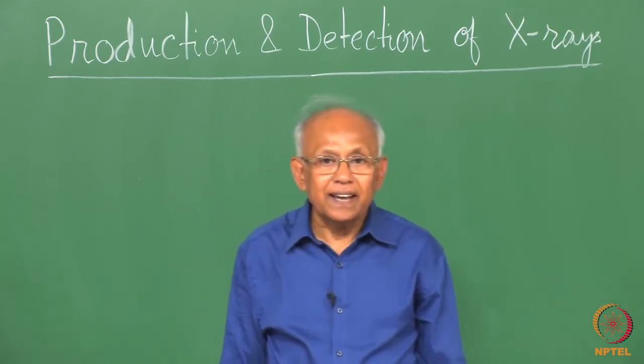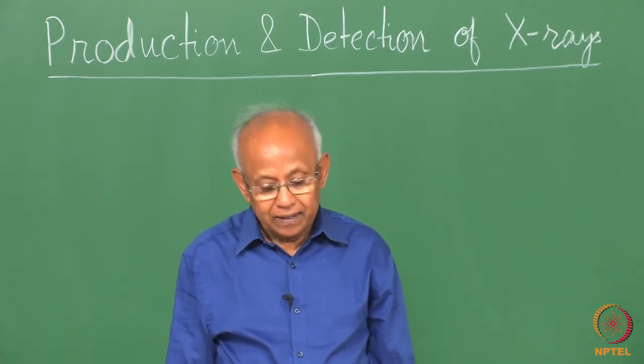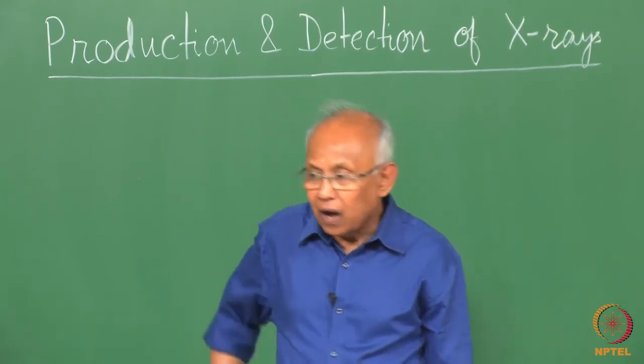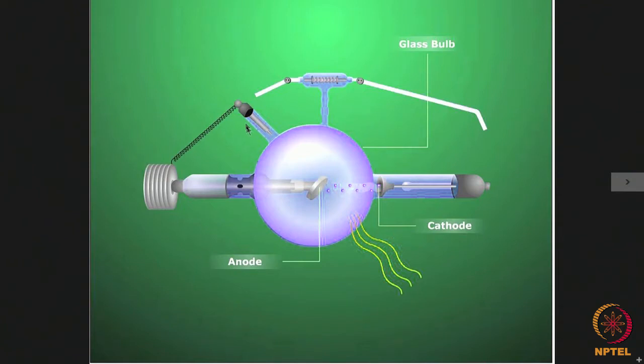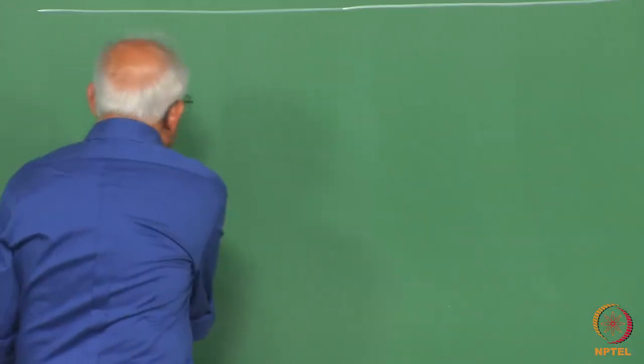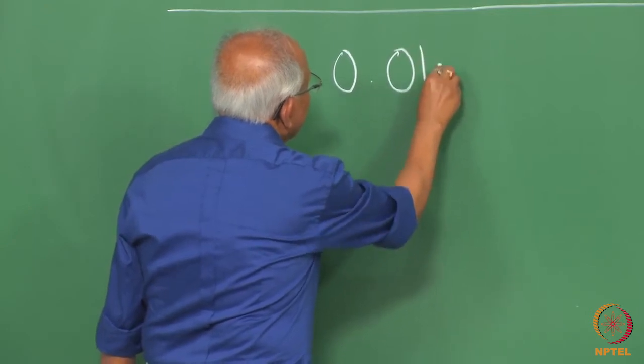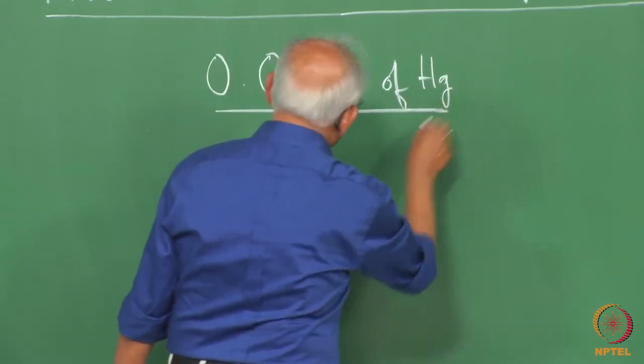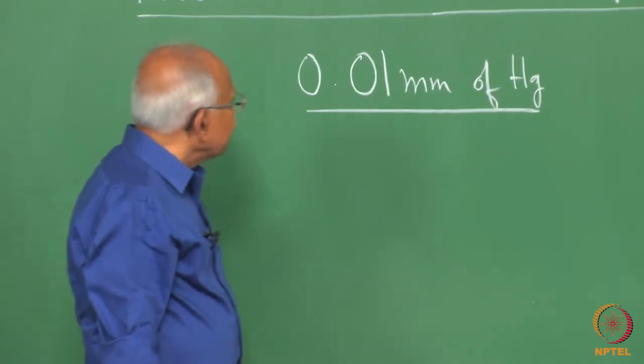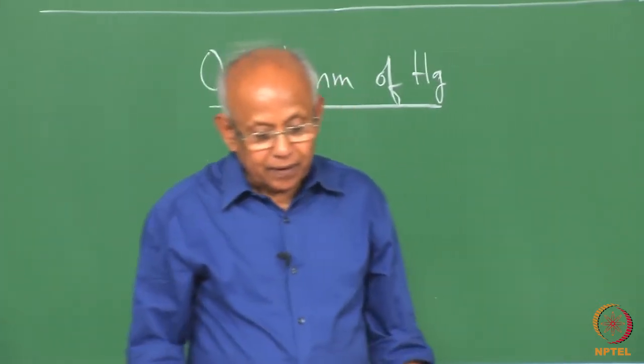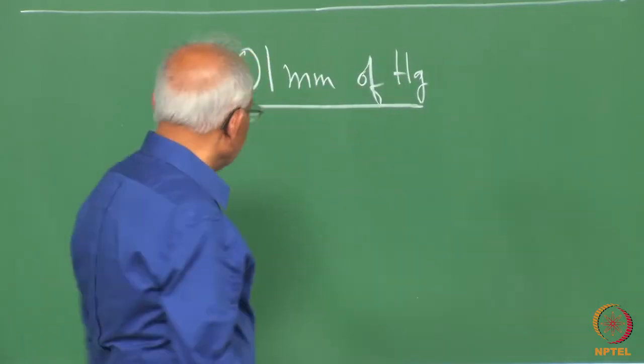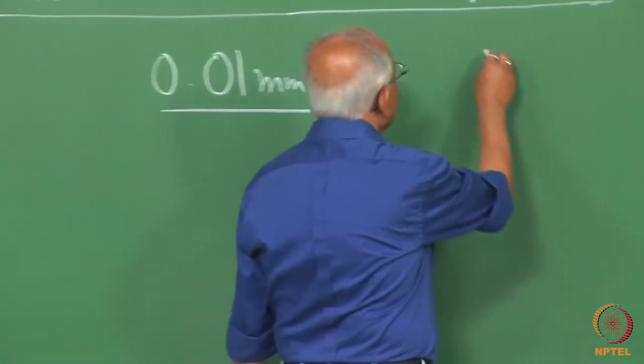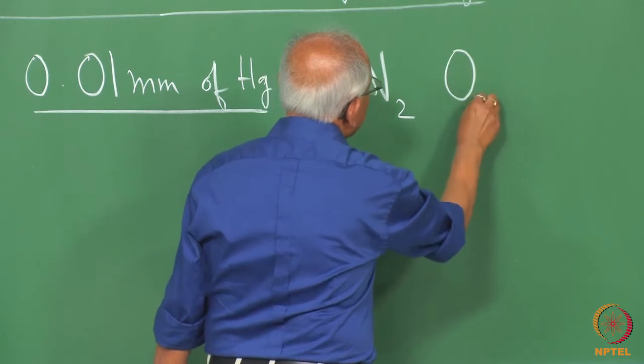The first X-ray tube was the gas tube. In the gas tube, we have a tube in which we put a gas pressure of the order of 0.01 millimeter of mercury. We have a gas pressure as low as 0.01 millimeter of mercury. The gases present are ordinary air, so we will have nitrogen and oxygen mostly.